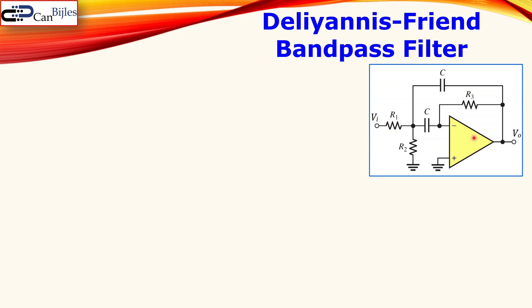Now, before we dive in our design example, let's first discuss the multiple feedback circuit, which is also called the Deliyannis-Friend bandpass filter. The circuit is shown here. You see here one operational amplifier. Why is it called multiple feedback? You see here one feedback, negative feedback. Another one is also shown here. So there are two negative feedbacks here. So that is multiple feedback.